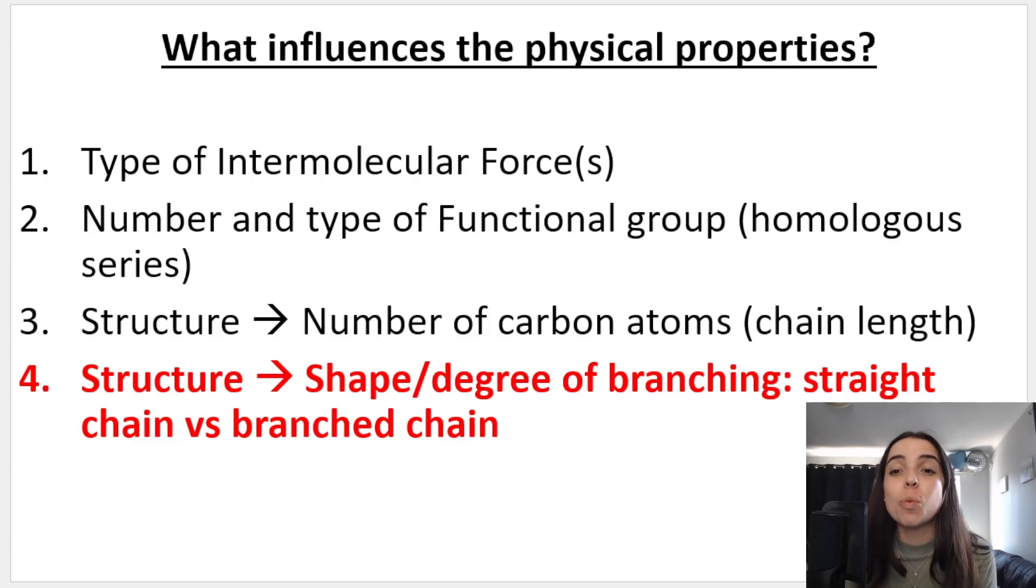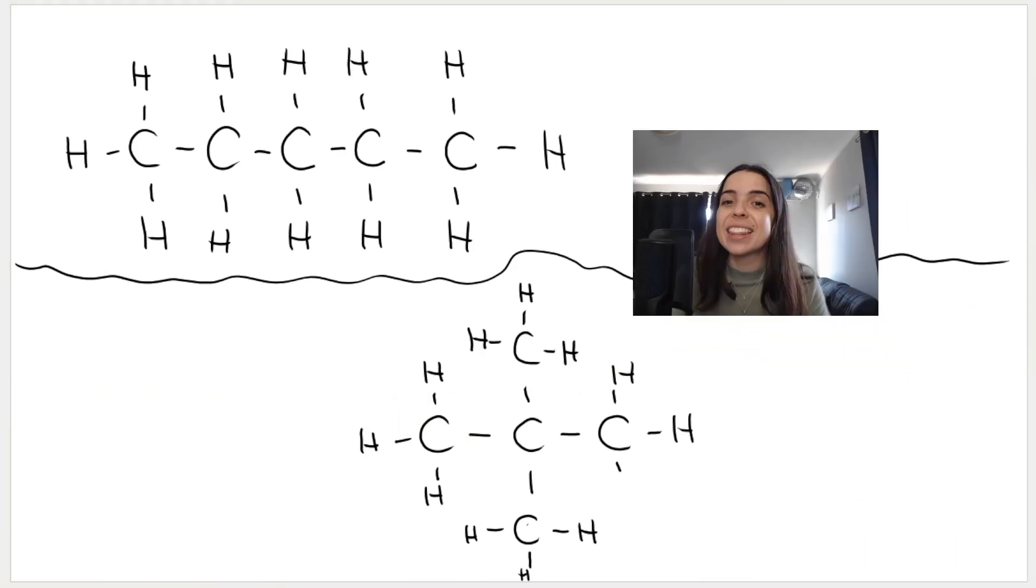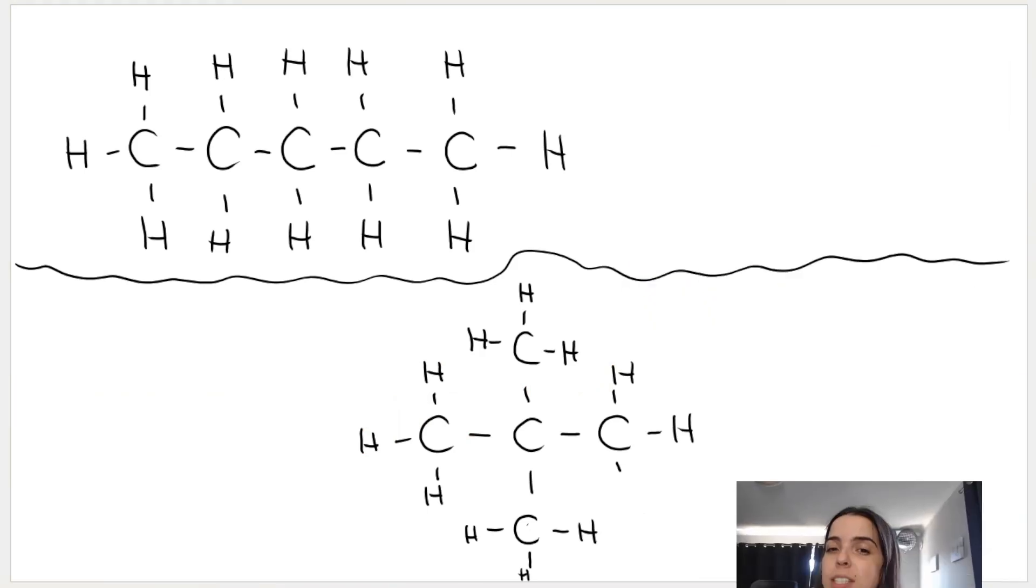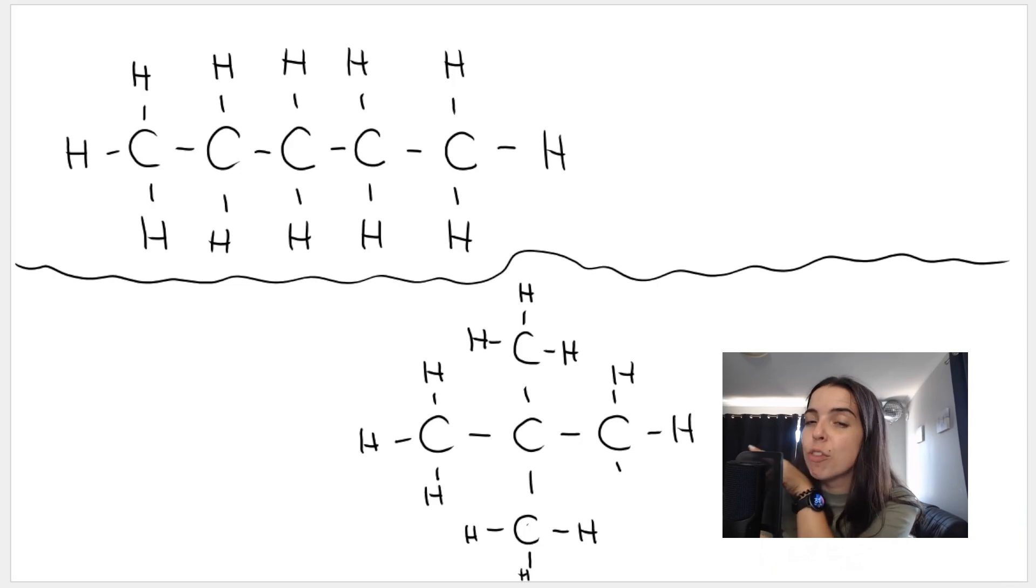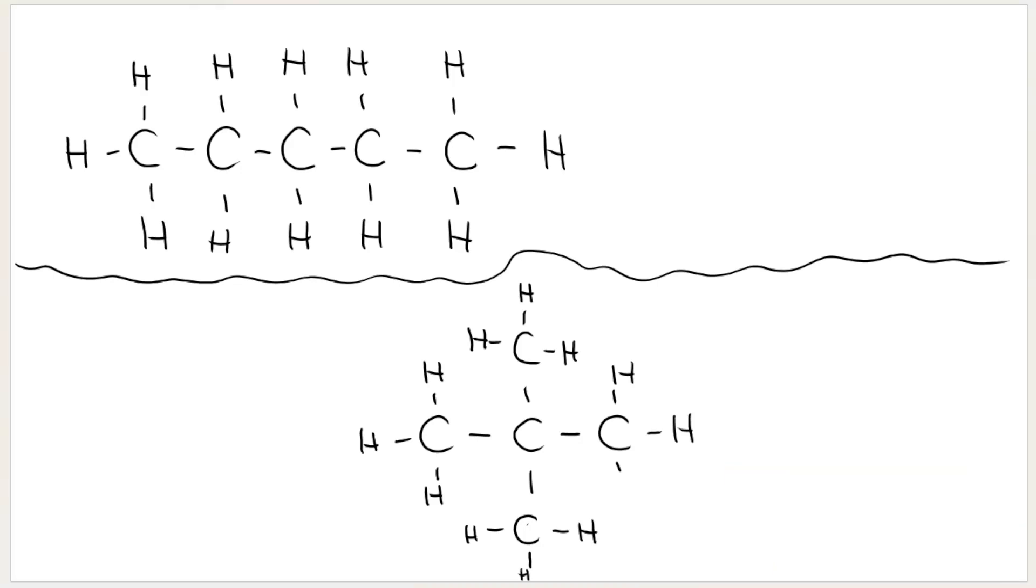This is talking about whether an organic compound is a straight chain compound, like this one here, versus something that has a high degree of branching. I hope you can see the difference between these two compounds. This compound over here has got five carbons and 12 hydrogens.